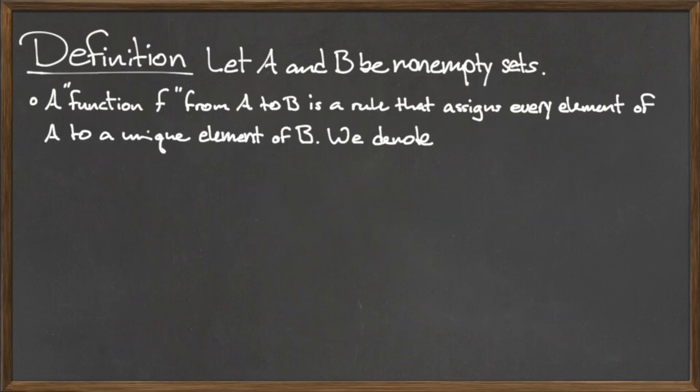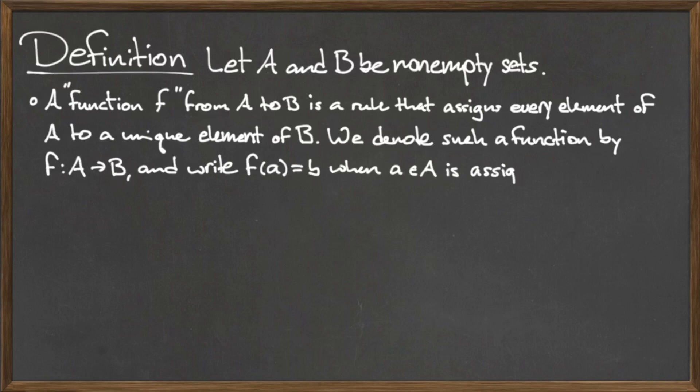Let A and B be two non-empty sets. A function f from A to B is a rule that assigns every element of A to a unique element of B.